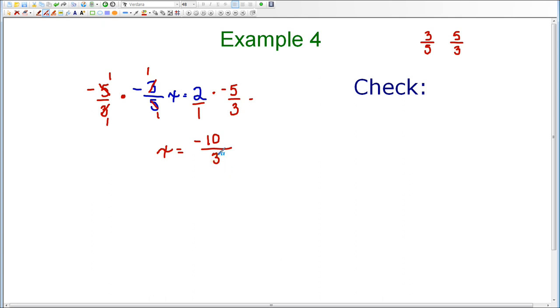So I end up with x equals negative ten-thirds as my answer. Now we need to check that by taking the original equation, which is negative three-fifths x equals two. And I'm going to substitute negative ten-thirds for x. And we need to see if that does indeed equal two.